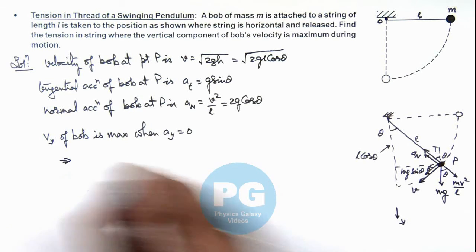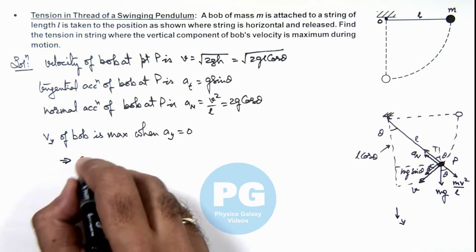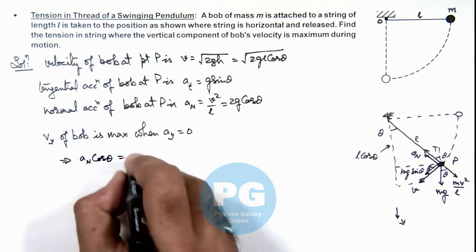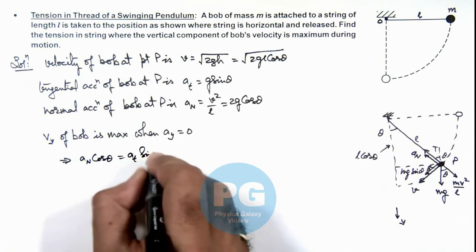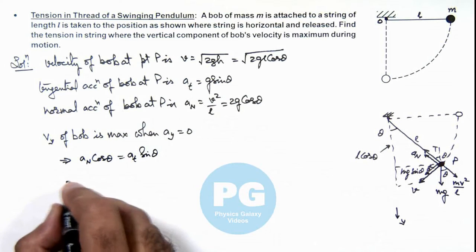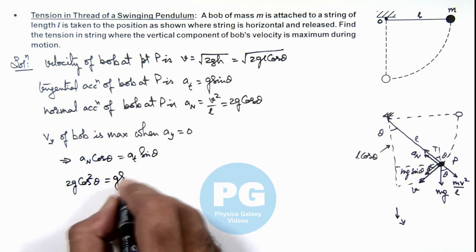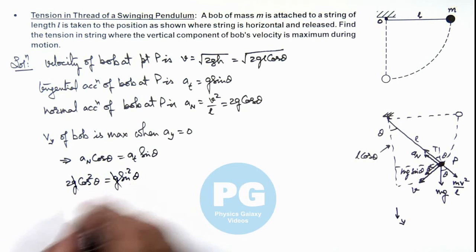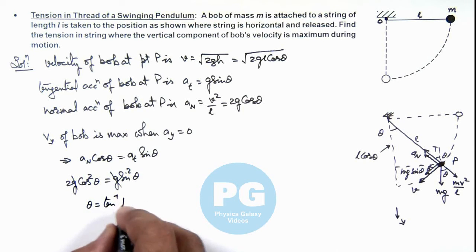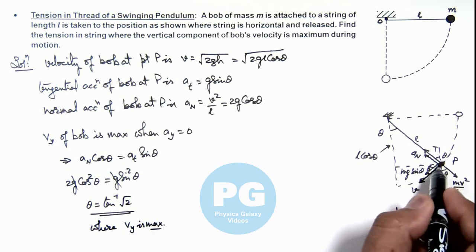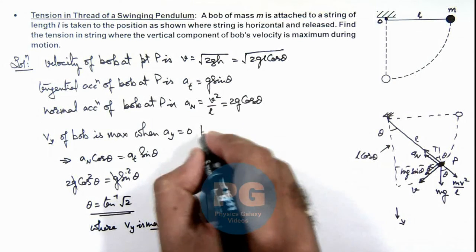This implies ay_n cos θ should equal ay_t sin θ. If we substitute the values, 2g cos² θ = g sin² θ. Here g gets cancelled out and we are getting the value of theta as tan⁻¹(√2). That is the point where we can write vy is maximum. So at this point we are required to find the tension in string.